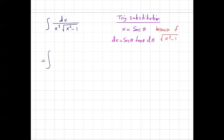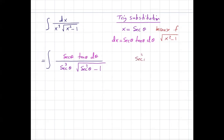This is the integral: wherever you see dx you write secant theta tangent theta d theta, and wherever you see x you use secant theta. So you have secant to the third power of theta times square root of secant squared theta minus 1. From pre-calculus, remember that secant squared theta minus 1 is equal to tangent squared theta.